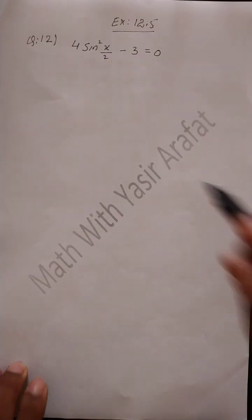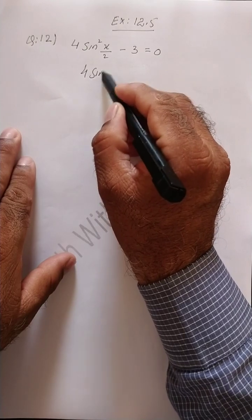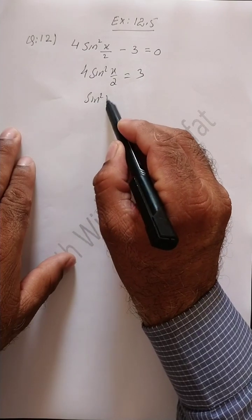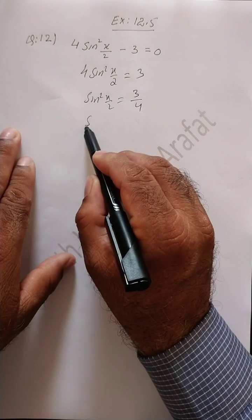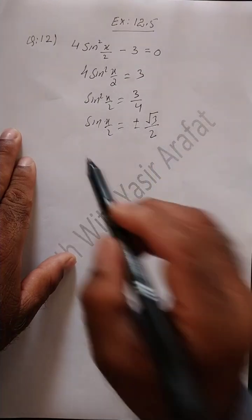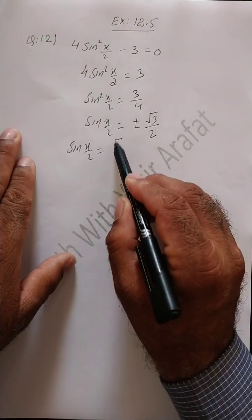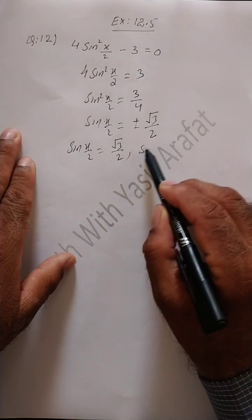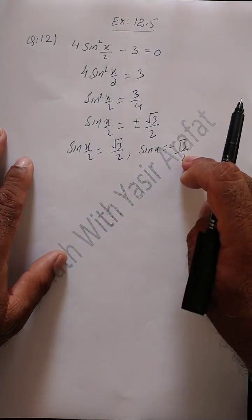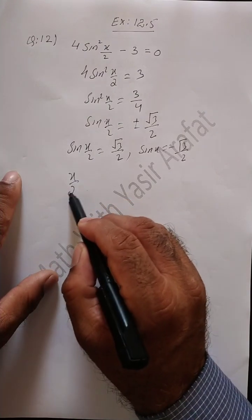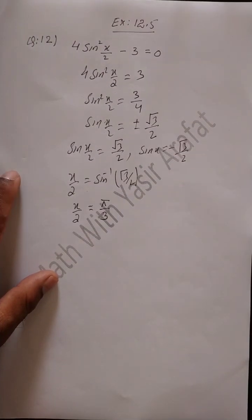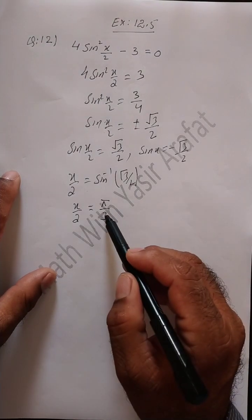Now let us go to Question 12: 4sin²(x/2) = 3. This gives sin²(x/2) = 3/4, so sin(x/2) = ±√3/2. This means sin(x/2) = √3/2 or sin(x/2) = −√3/2. We will work each case separately. For the positive case: x/2 = sin inverse (√3/2).